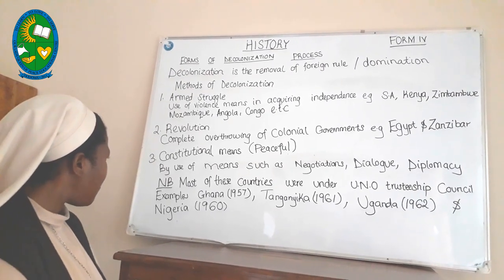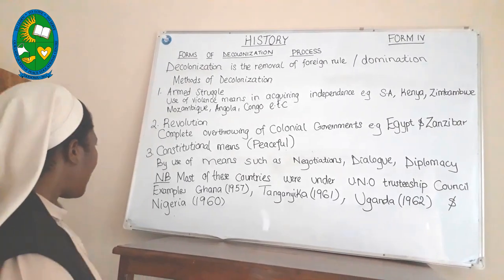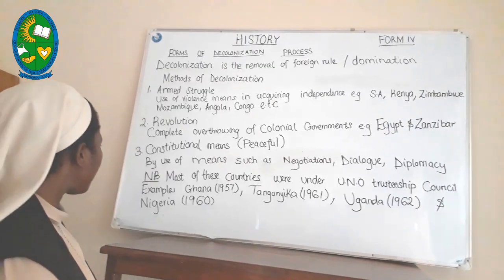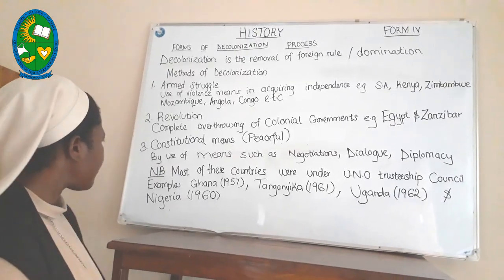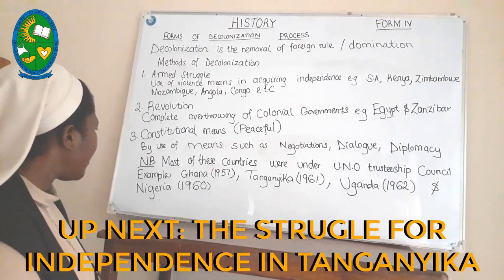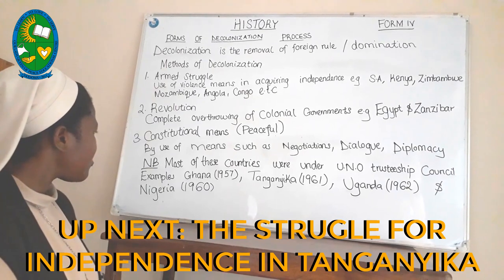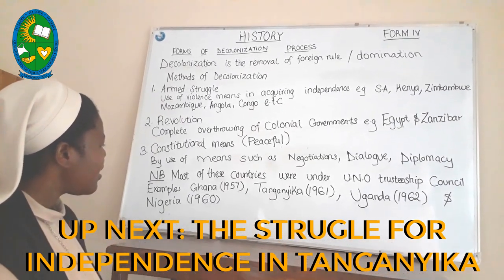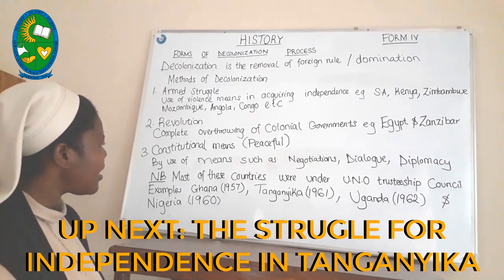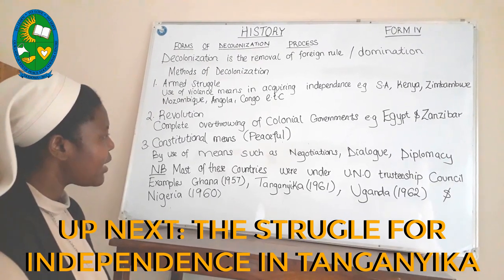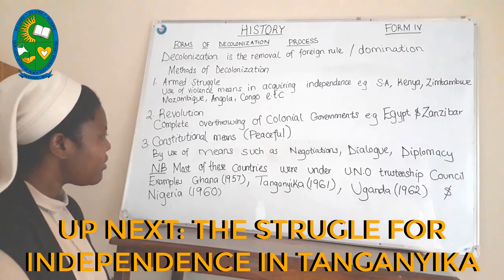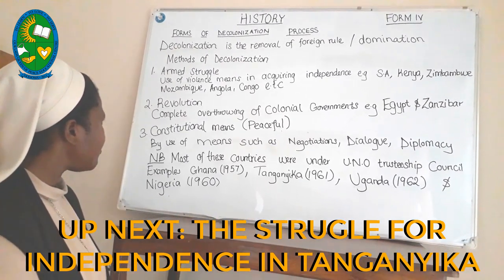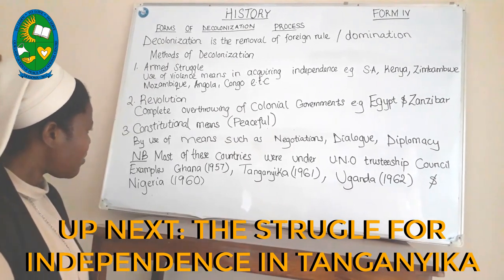Examples of African countries that gained their independence through peaceful means include Ghana, which received independence in 1957; Tanganyika in 1961; Uganda in 1962; and Nigeria in 1960.